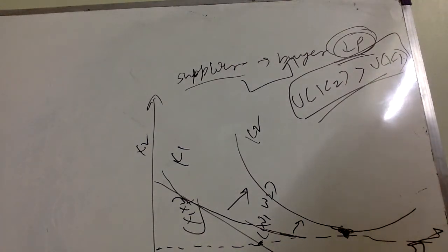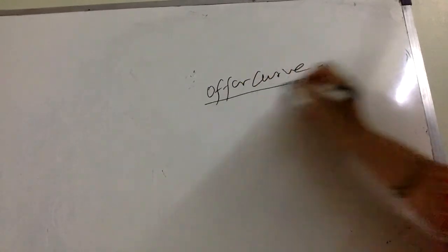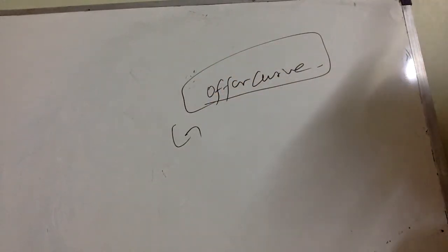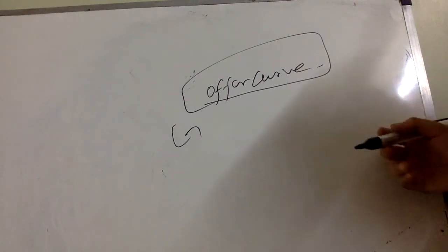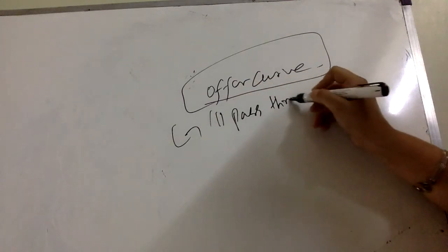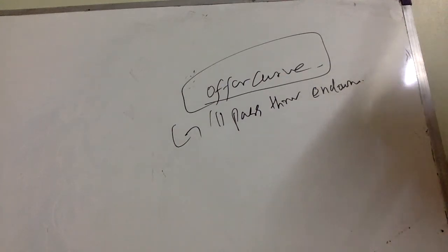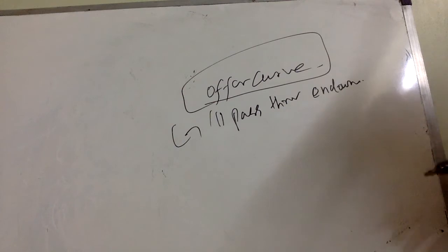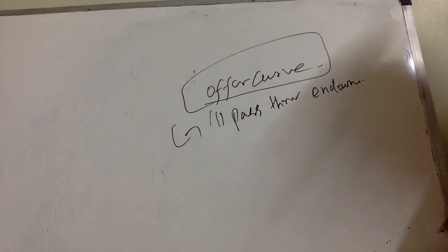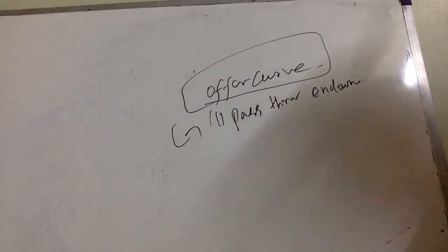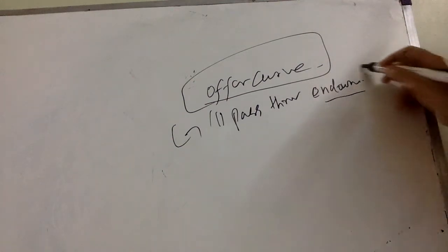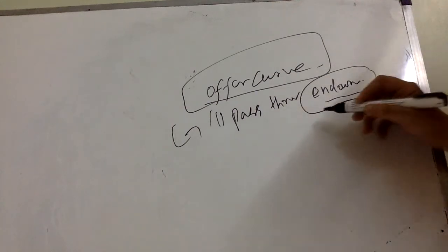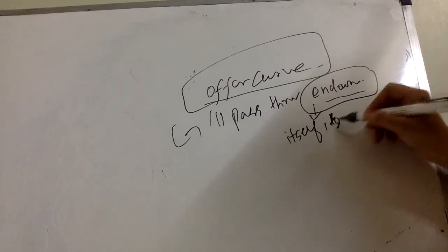Next, let's discuss the offer curve. An offer curve has certain properties: it passes through the endowment point, because at the endowment the endowment itself can be the consumed bundle. The offer curve traces, for a given individual at different prices, whether they are a net supplier, a net buyer, or at some price not willing to trade at all — simply consuming their own endowment.